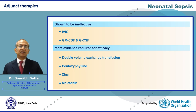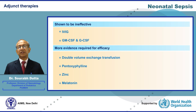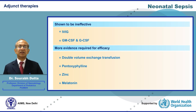A variety of adjunctive therapies have been tried out, but none have been found to be successful. There is evidence to show that intravenous immunoglobulins and colony-stimulating factors are not effective. There are small trials offering hope for double-volume exchange transfusions, pentoxifylline, zinc and melatonin in the adjunctive treatment of Sepsis; however, the total information size is rather limited for these interventions and they cannot be recommended as a standard of care. They must be evaluated in the setting of randomized controlled trials.